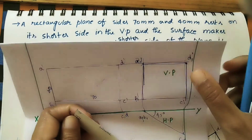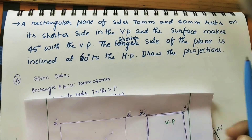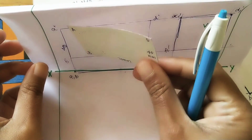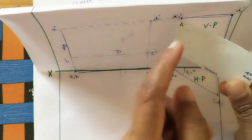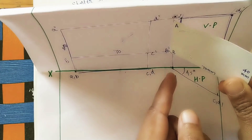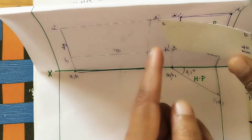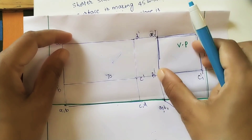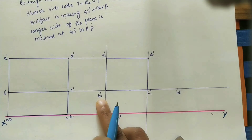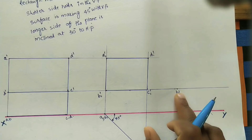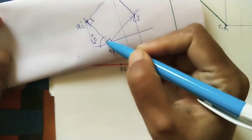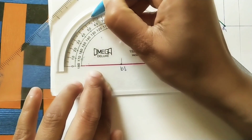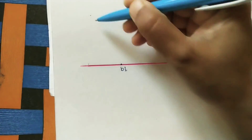The next given data is: the shorter side makes 60 degrees with the HP. The plane, which was in this position, now tilts so that the shorter side makes 60 degrees with the horizontal plane. The reduced rectangle from step 2 now tilts at 60 degrees. Take any gap and mark B2′ in the front view, then draw a 60-degree line from B2′.